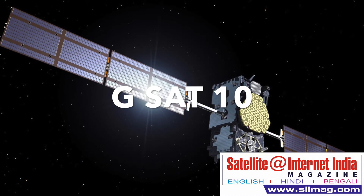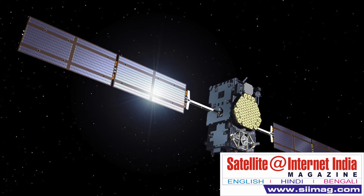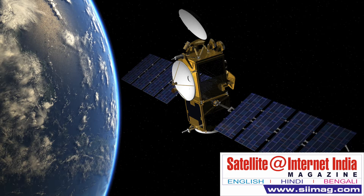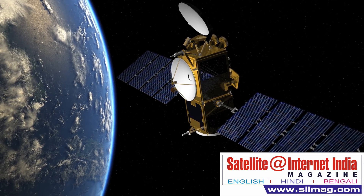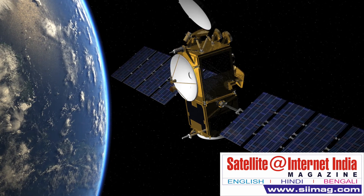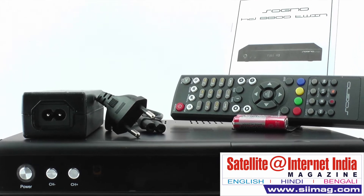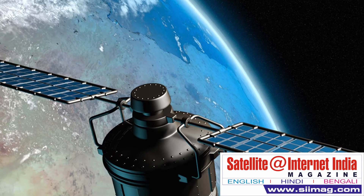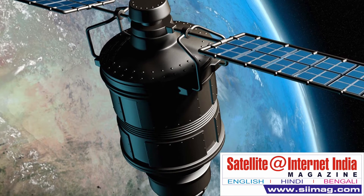GSAT-10: This is a satellite owned by ISRO, launched on 29 September 2012 with a mission life of 15 years. Its geostationary position is 83 degrees east longitude, where it is co-located with INSAT-4A. This satellite has 12 Ku-band transponders. Tata Sky is now using all GSAT-10 transponders in addition to the existing INSAT-4A to augment its transponder capacity, and has already begun adding new channels from this satellite using MPEG-4 compression.